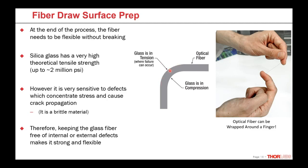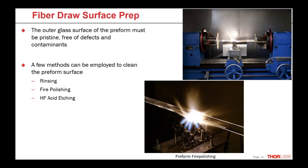If there's any defect on the surface of the outer tensioned part of the fiber, it can create a crack that will propagate and break it. So we need to keep the glass totally free of internal and external defects to preserve the glass's inherent tensile strength. To that end, while preparing the preform for drawing, we do surface prep procedures to eliminate any defects left over from the preform manufacturing process or from storage, aiming for a pristine perfect surface. Methods range from rinsing to hydrofluoric acid etching, all the way up to fire polishing — which is what we do here at Thorlabs.